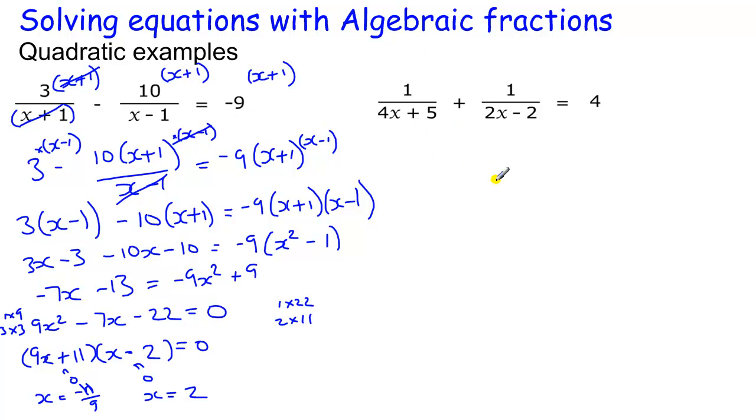Okay, this equation, same sort of thing. We've got bigger numbers on the bottom here. Times throughout by 4x plus 5. These two cancel, one plus one lot of 4x plus 5, which is 4x plus 5 over 2x minus 2, equals 4 lots of 4x plus 5.